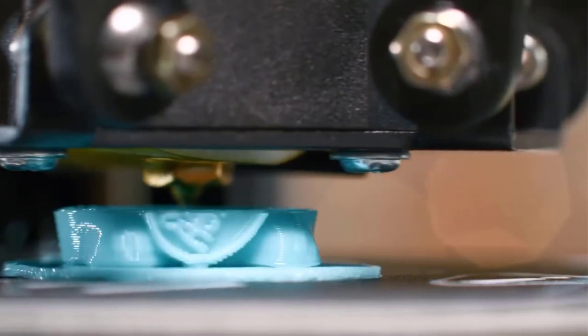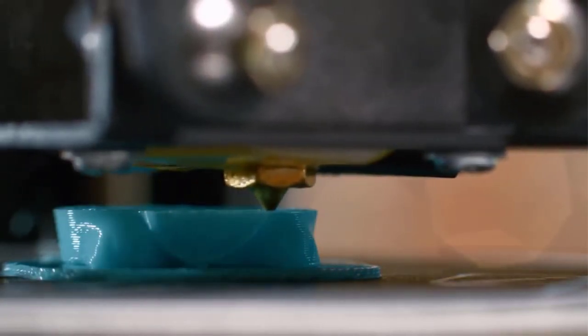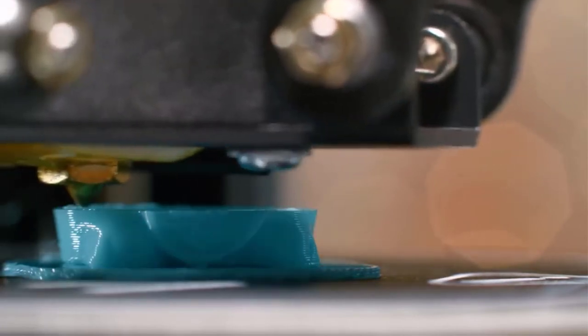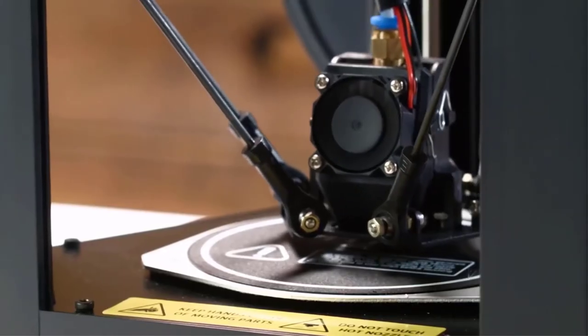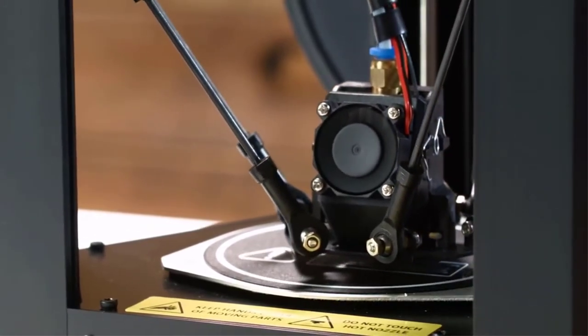One of the biggest hurdles for any 3D printer is maintaining a level print surface, which can lead to poor quality prints, adhesion problems, and clogs. The MP Mini Delta addresses all those with auto bed leveling for easy setup and printing.